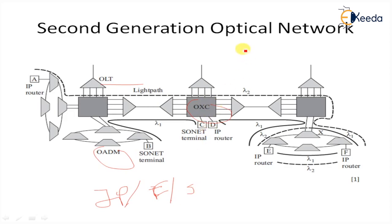In the second generation optical network, the three main functions are routing, switching, and intelligence in the optical layer. The key network elements that enable optical networking are optical line terminals (OLT) and OADMs, which are now used in long-haul and metro networks as well.